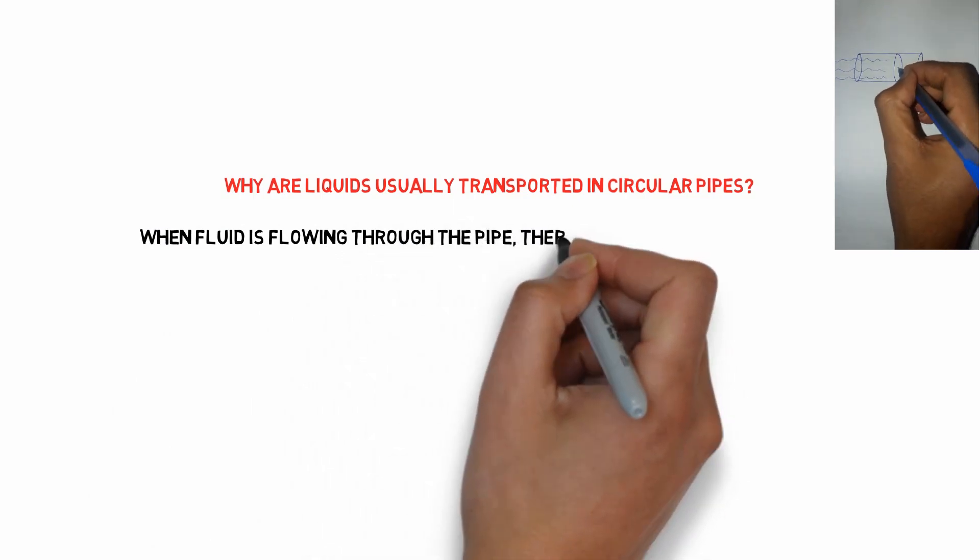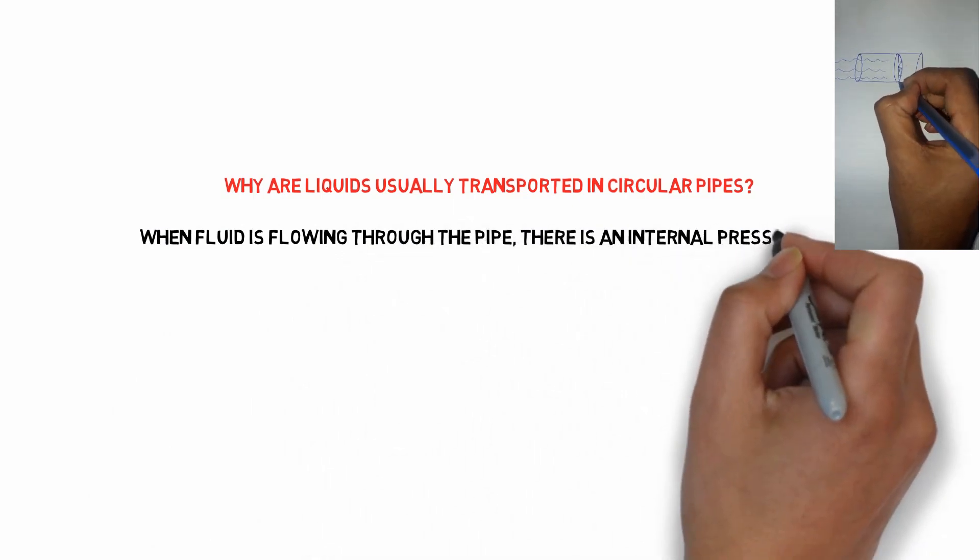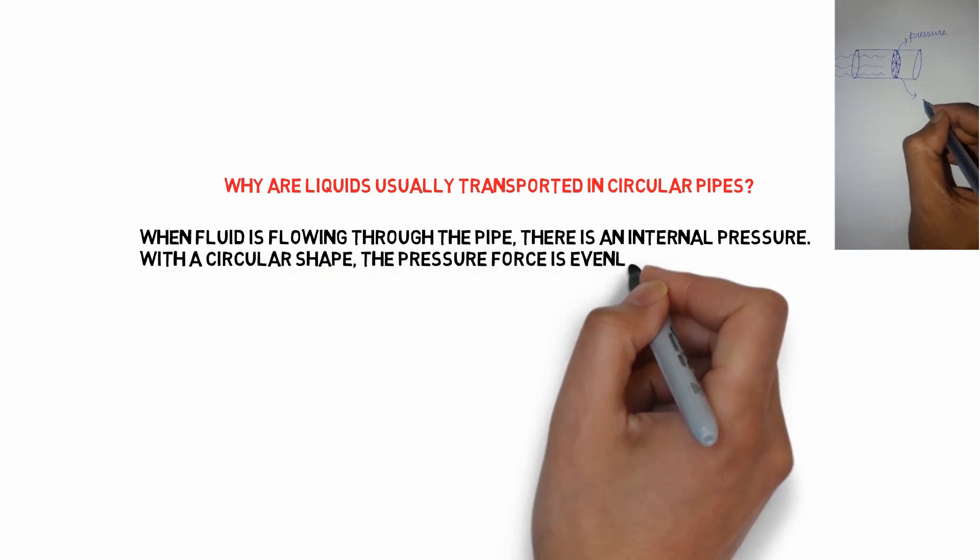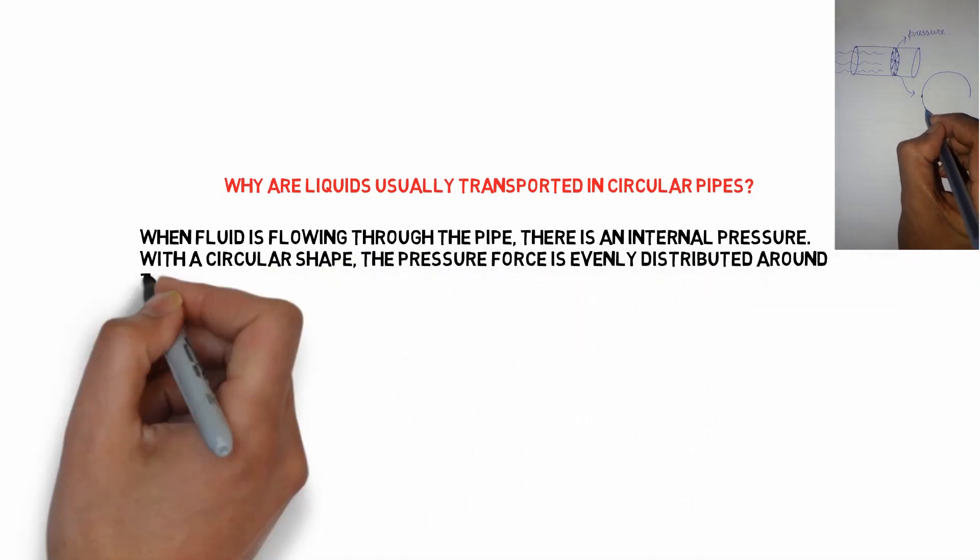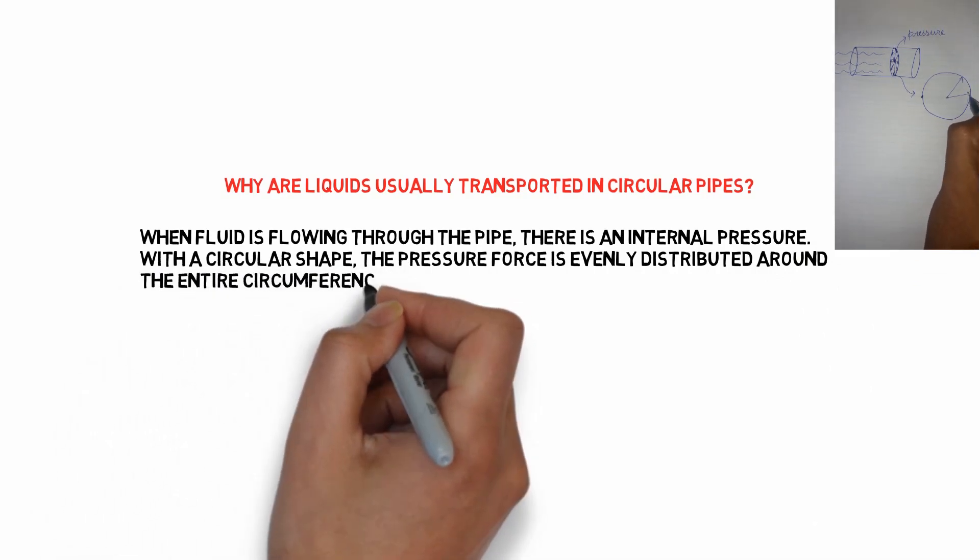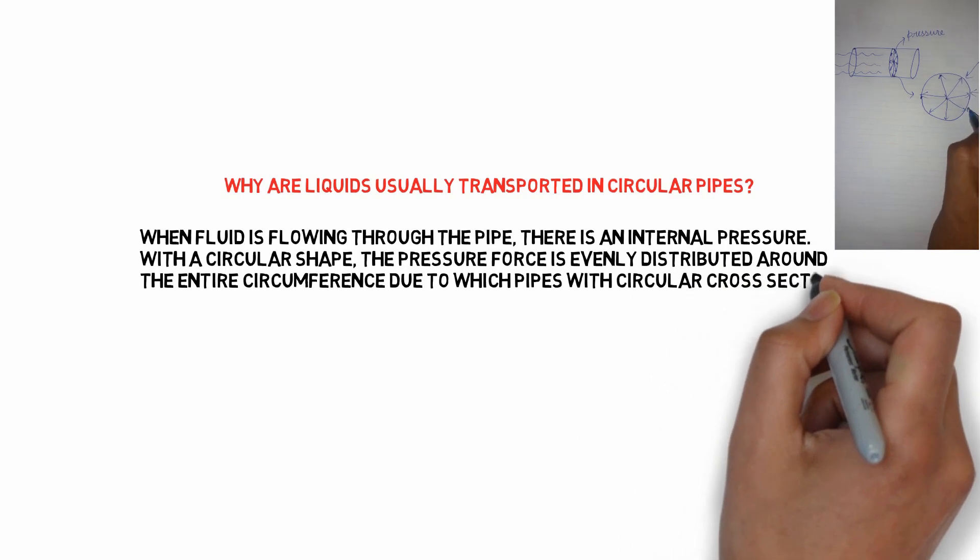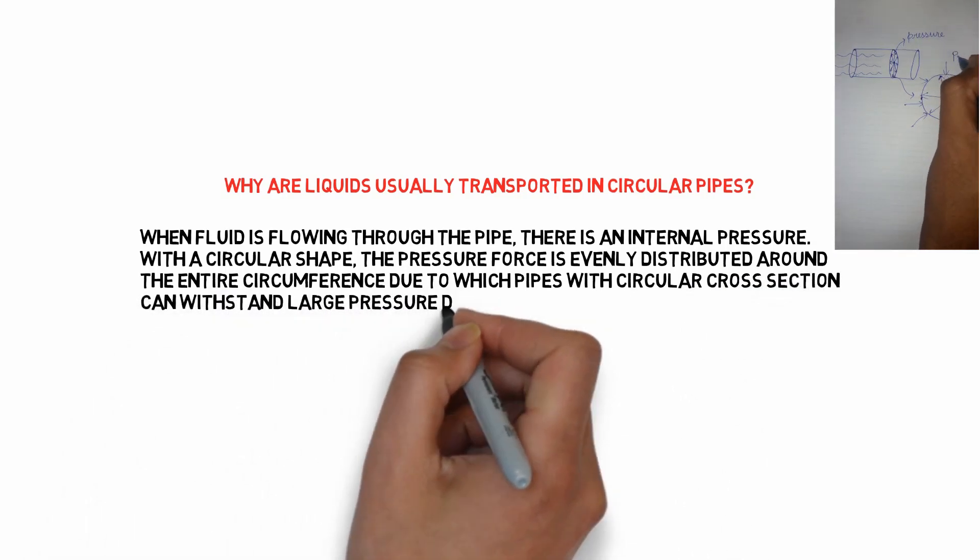When fluid is flowing through the pipe, there is an internal pressure, and with a circular shape, the pressure force is evenly distributed around the entire circumference, due to which pipes with circular cross-section can withstand large pressure differences between the inside and the outside without undergoing any significant distortion.